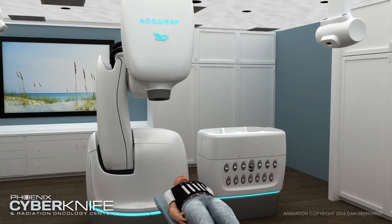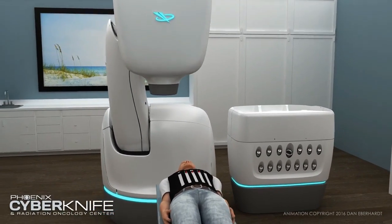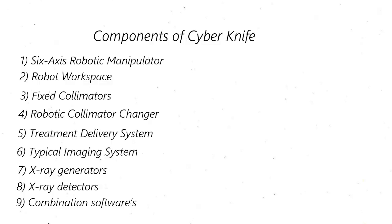Let's look into the components of a CyberKnife. The major components of the CyberKnife are the 6-axis robotic manipulator, the robot workspace, fixed collimeters, robotic collimeter changer, treatment delivery system control console hardware, typical imaging system, x-ray generators, x-ray detectors, and combination software.